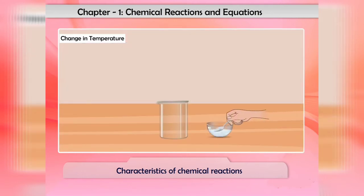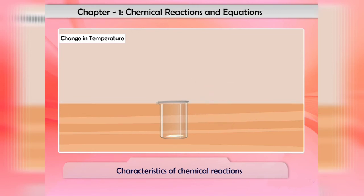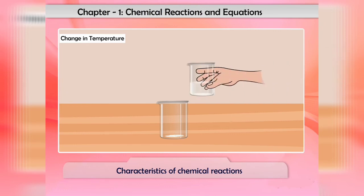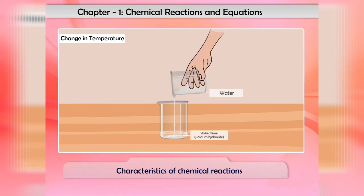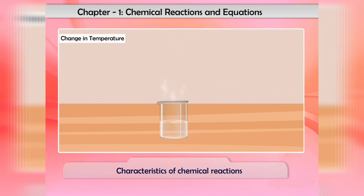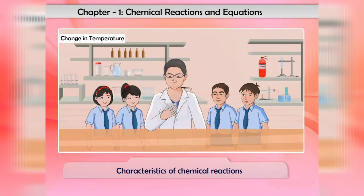When calcium oxide, also known as lime or quicklime, reacts with water, slaked lime is formed and a lot of heat is produced. This heat raises the temperature, causing the reaction mixture to become hot. These types of reactions are called exothermic reactions, which means heat-producing reactions.